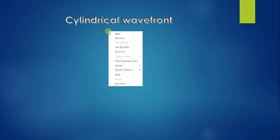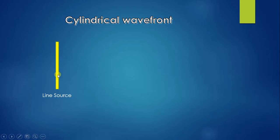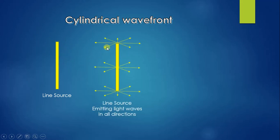For a cylindrical wavefront, I take a line source — a vertical line emitting light in all directions, just like a tube light. A tube light is a line source. Assume this line source is emitting light in all directions. The arrows indicate the spreading of light in all directions. I have taken only three positions for understanding, but assume this spreading takes place along the whole length of the line source.